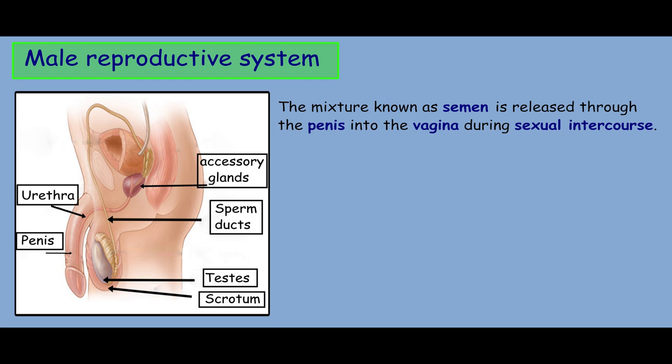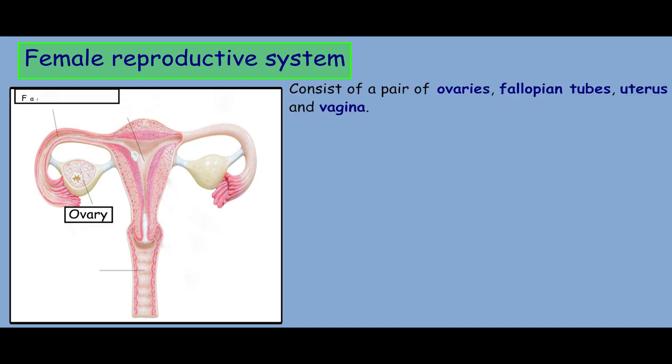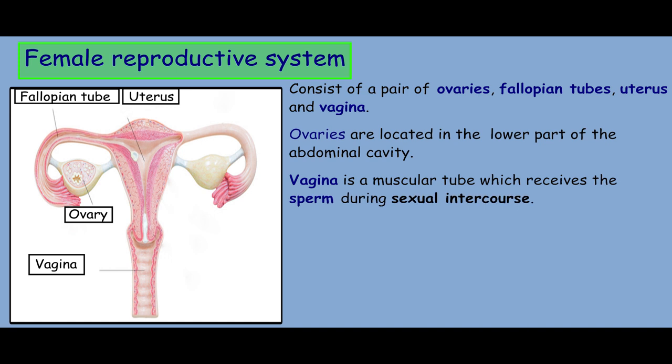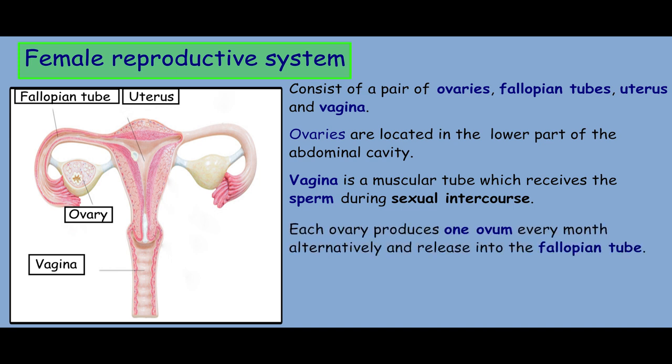The mixture known as semen is released through the penis into the vagina during sexual intercourse. The female reproductive system consists of a pair of ovaries, fallopian tubes, uterus, and vagina. The ovaries are located in the lower part of the abdominal cavity. The vagina is a muscular tube that receives the sperm during sexual intercourse. Each ovary produces one ovum every month, alternately, and releases it into the fallopian tube.